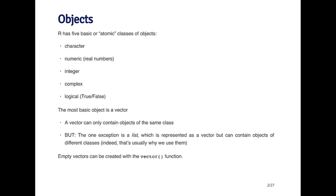The list is one exception to the general rule that vectors can only contain elements of the same class. You can create an empty vector with the vector function. The vector function has two basic arguments. The first argument is the class of the object, the type of object that you want to have in the vector. And the second argument is the length of the vector itself.